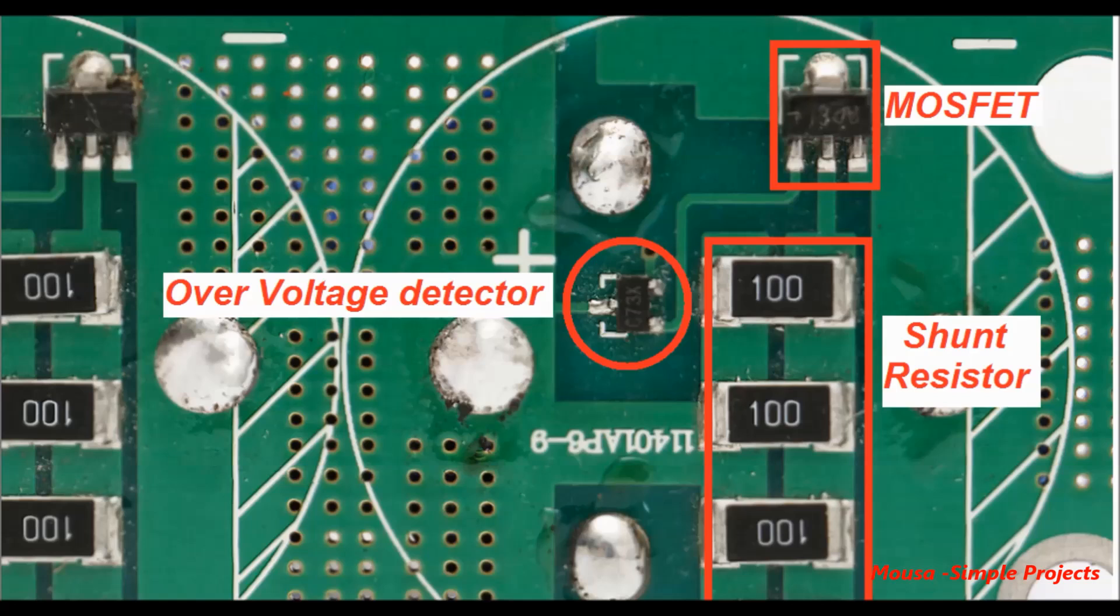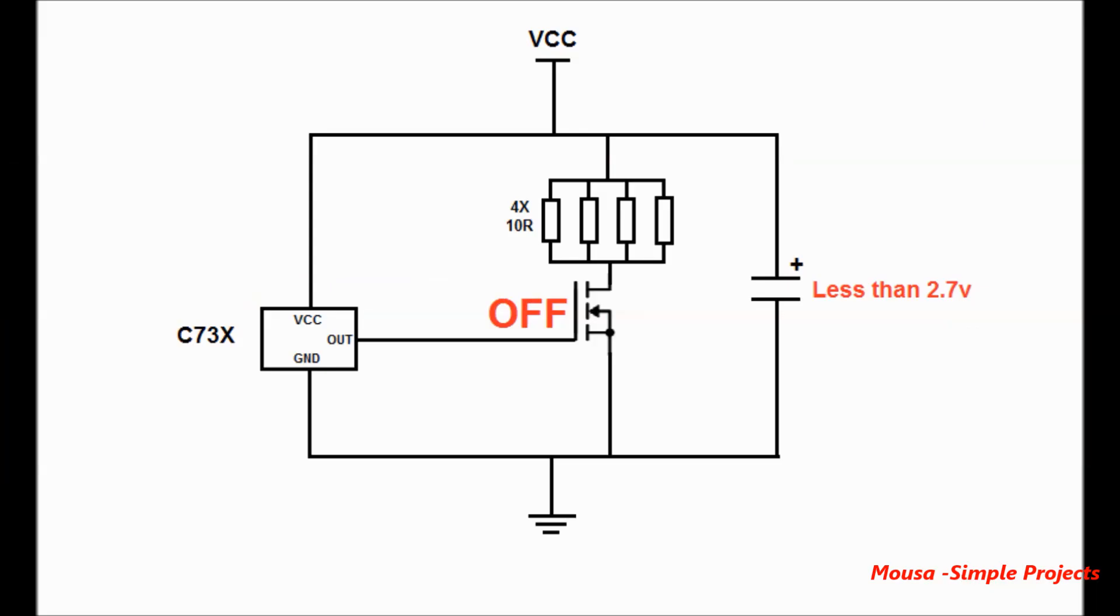The protection board of the super capacitor prevents charging of each capacitor more than 2.7 volts by clipping the excessive voltage using a shunt resistor.